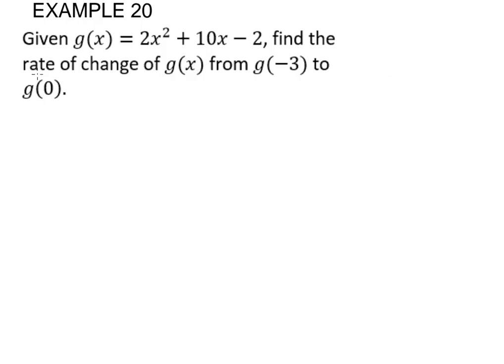So we see rate of change, so that implies the rate of change formula, which is g of b minus g of a all over b minus a. So we pull out a and b. The first one here is a, this second one is b. So we need to set this up now.